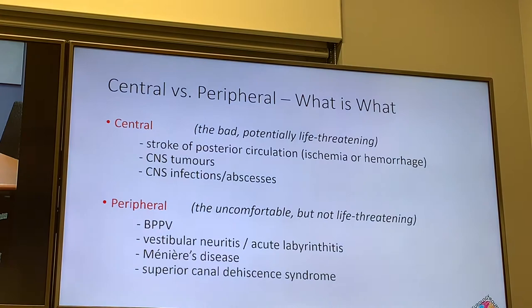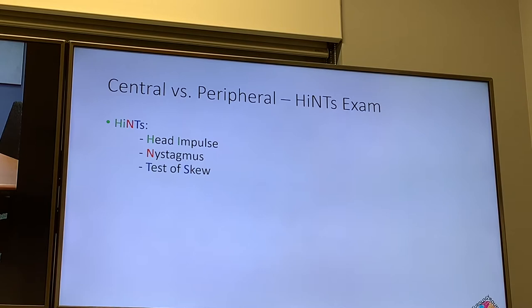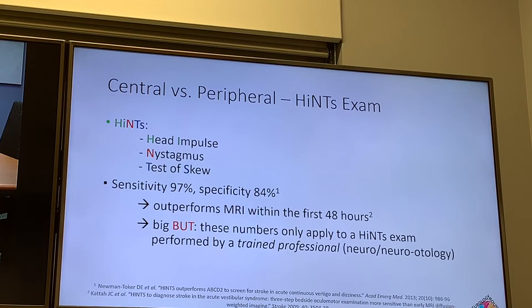HINTS stands for Head Impulse, Nystagmus, and Test of Skew — a three-part exam performable in under a minute at the bedside. It is 97% sensitive and 84% specific for ruling out a central cause of vertigo. In the first 48 hours, it actually outperforms MRI. However, these impressive numbers are only valid when the exam is done by someone skilled at interpreting the clinical signs — typically neurology or neurotology — so we need to get good at it.